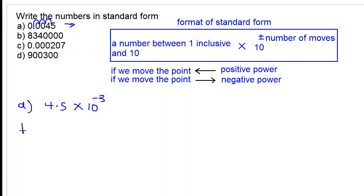Let's move on to part B. So let's locate the point in this big number, 8,340,000. The point is here. We move the point: 1, 2, 3, 4, 5... 8.3 is too big. 6... 8.34. Yes, that is our number between 1 and 10.